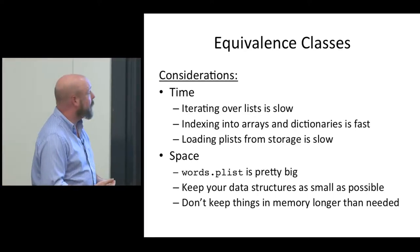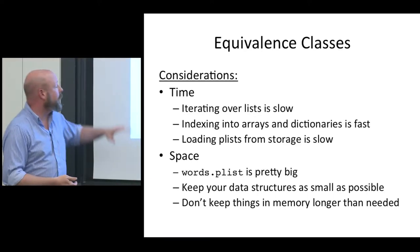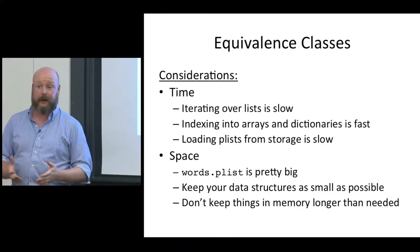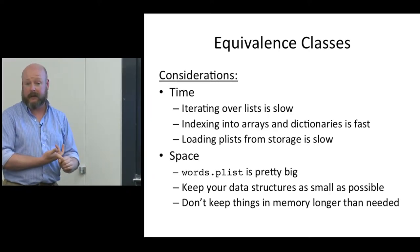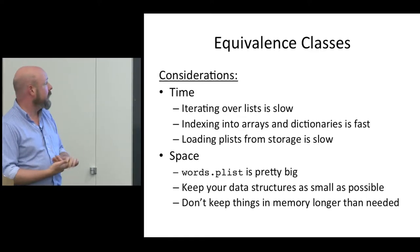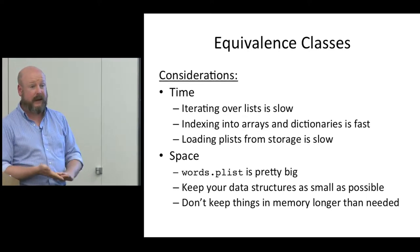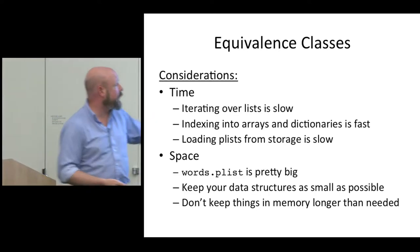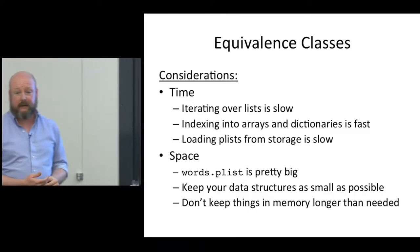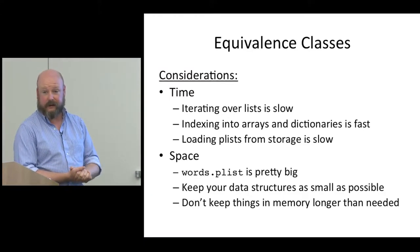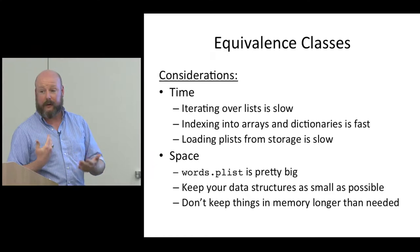What should we be thinking about as we implement this? Time and space are things we should always be thinking about. When we think about time, iterating over lists is going to be a very slow process. If we can do something that uses an index, it will help performance a lot — we can index into arrays and dictionaries very quickly. Loading plists from storage is actually a slow process, so if we can keep stuff in memory, that is overall going to help performance.